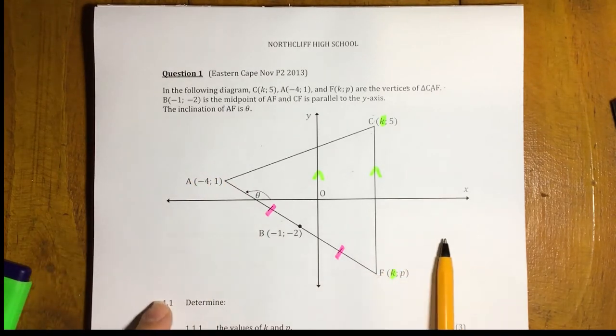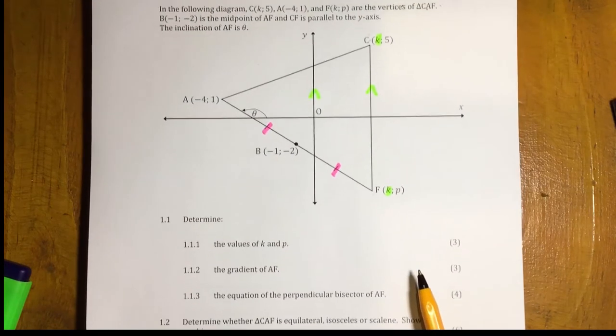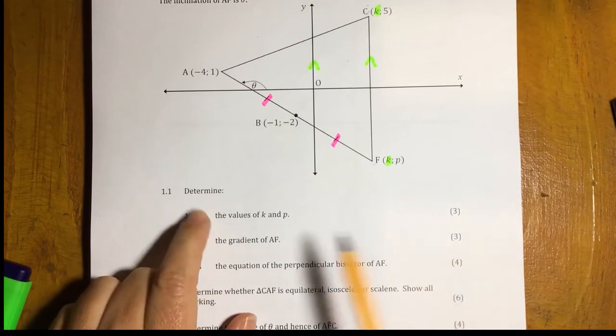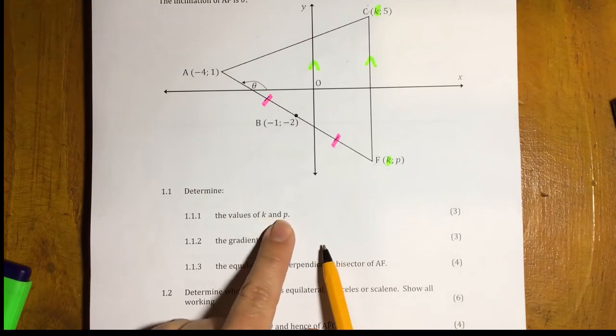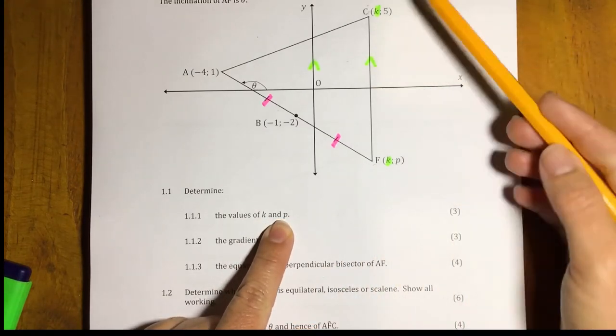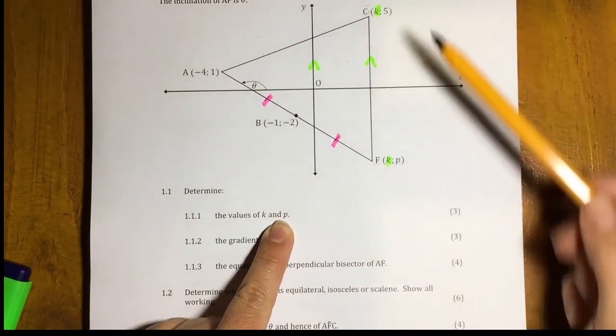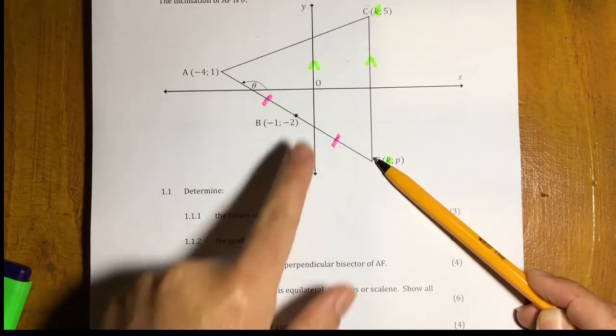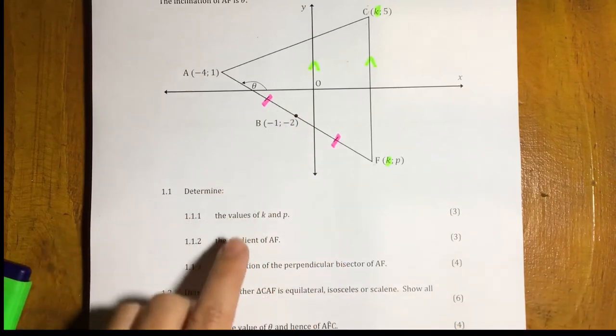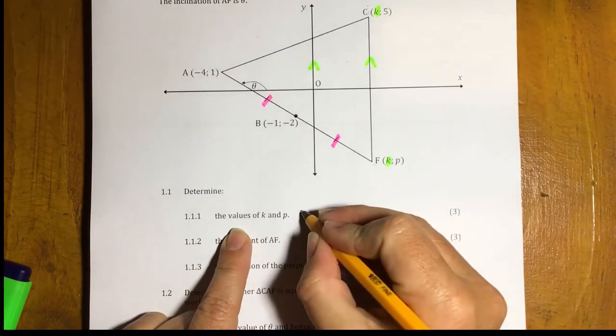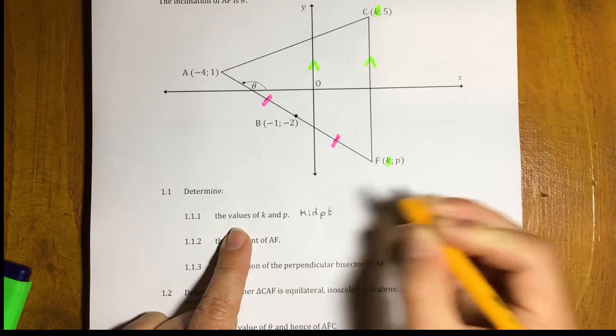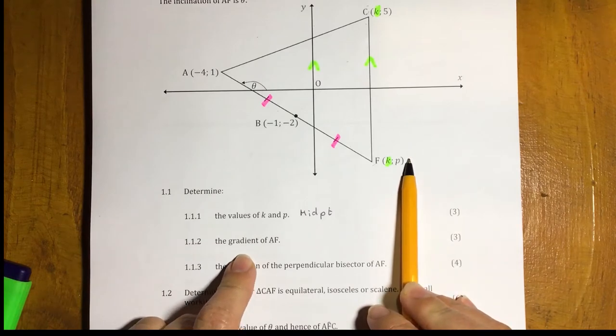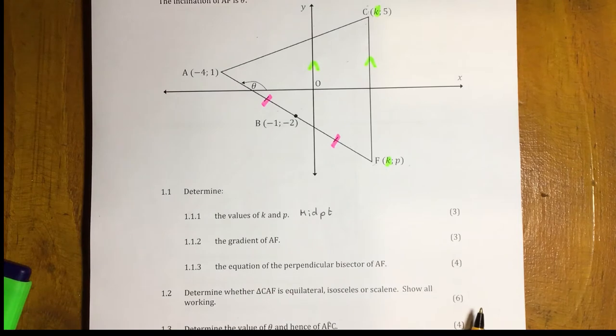So, now we can go to our first question. So, let's move that there so that we can see the question. 1.1. Determine the values of K and P. So, K and P. Unfortunately, C, we can't link to any of the points on the Cartesian plane other than F, which is also missing K. So, we've got to link F to B or A. And we've been told that that's a midpoint. So, somehow you're going to use your midpoint to work out the values of K and P. I'm not going to tell you how to do it, but I'm going to give you tips on each of the questions.